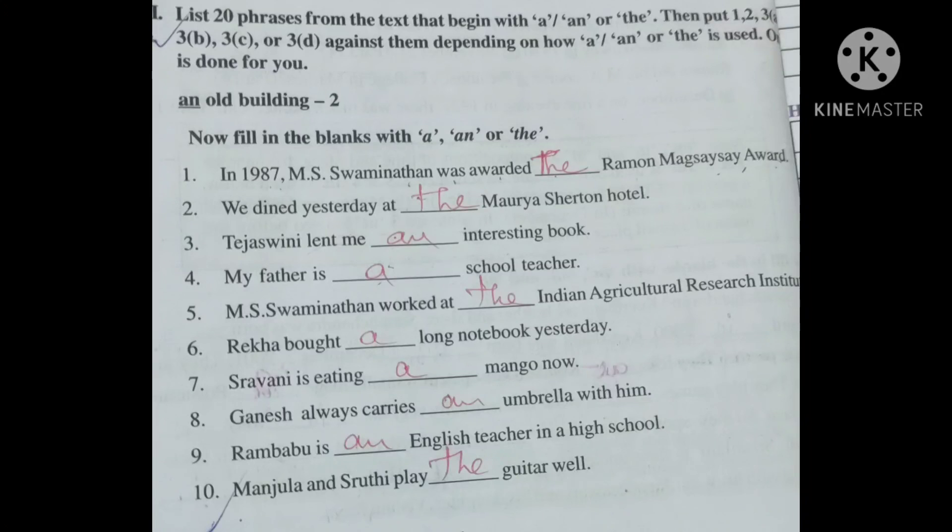Rambabu is an English teacher in a high school. E has a vowel sound, an English teacher. Manjula and Sruthi play the guitar well. Musical instruments take the. I think children you understood.